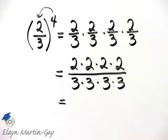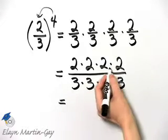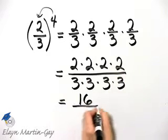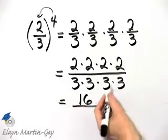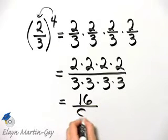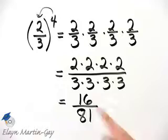Notice there are no common factors here, so let's go ahead and multiply. Two times two is four times two is eight times two is sixteen over three times three is nine times three is twenty-seven times three is eighty-one. So this fraction raised to the fourth power simplifies to sixteen over eighty-one.